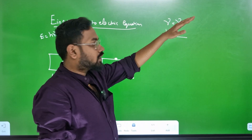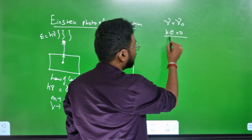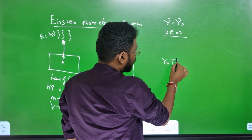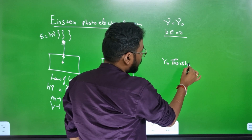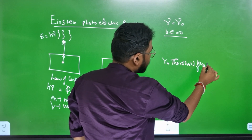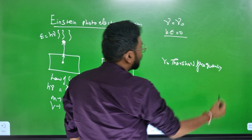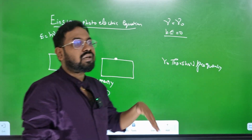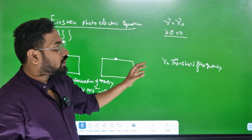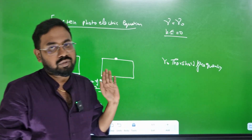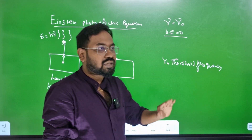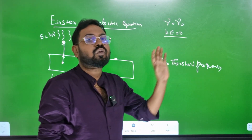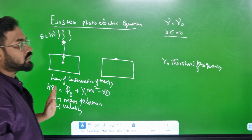Nu is equal to nu-zero. Nu-zero is the threshold frequency, where kinetic energy is zero. What is threshold frequency? The minimum frequency required to emit a photoelectron is the threshold frequency. If the frequency is at least this minimum, we can see a photoelectron.